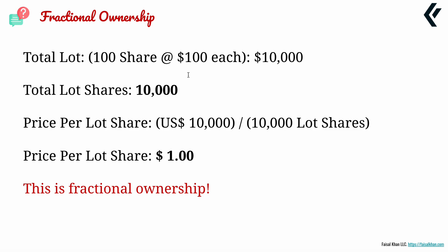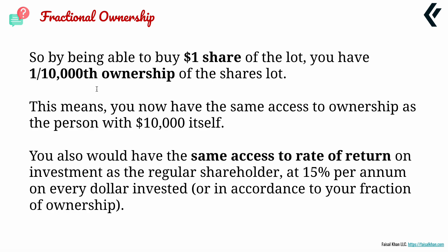So now we went from $100 down to $1. Yes, it's giving you one ten-thousandth of ownership, but now you have ownership. By being able to buy a $1 share of the lot, you now have one ten-thousandth ownership of the shares lot. This means you can now have the same access to ownership as the person with $10,000. You would also have the same access to the rate of return — 15% per annum on every dollar invested, in accordance with your fraction of ownership. So rather than standing on the sideline wishing you had the money, now you can invest $30 or $600 worth of shares and keep putting in $30 every week.